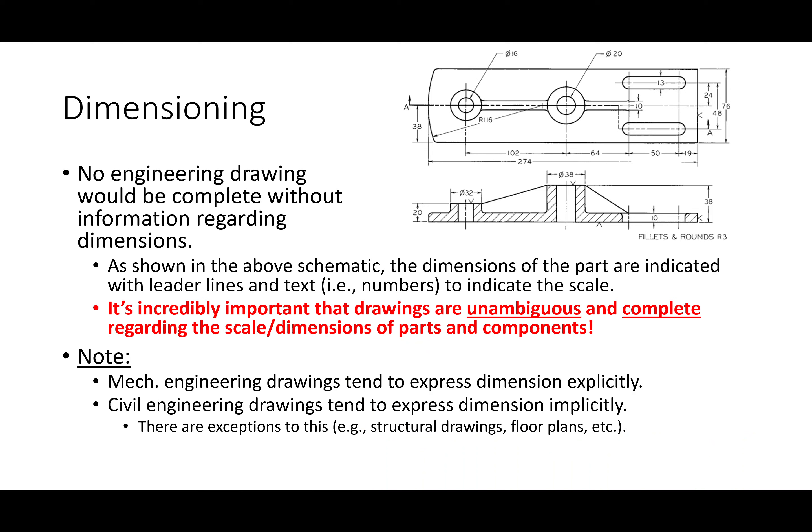Dimensioning. No engineering drawing would be complete without information regarding dimensions. If I produce a design and say here's a plate with a hole in it, that doesn't really help — you need information about the size of the plate, its thickness, where the holes go, how to measure the holes relative to other dimensions, the diameter of the hole, and so on. You can see very specific information on a drawing: distance between holes, diameter of holes, text and arrow leaders indicating dimensions and scale.